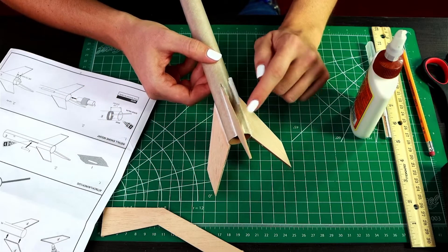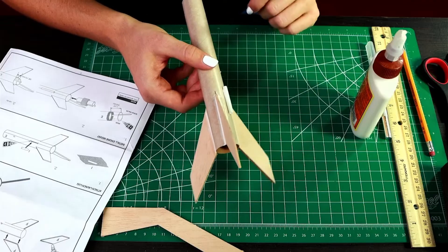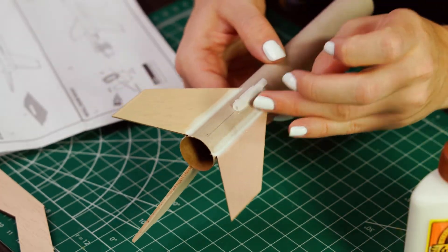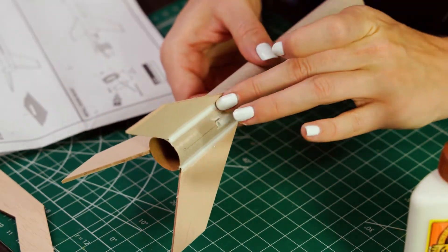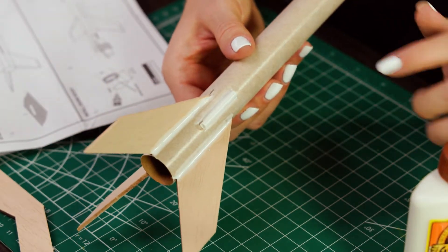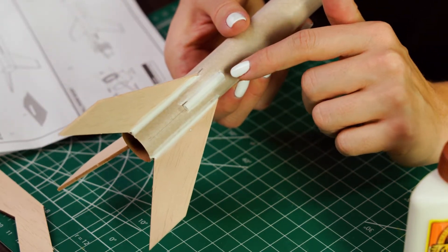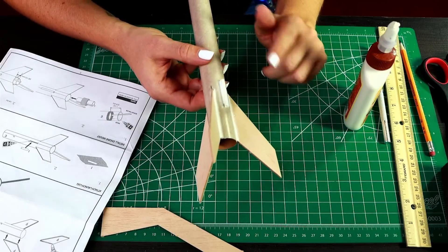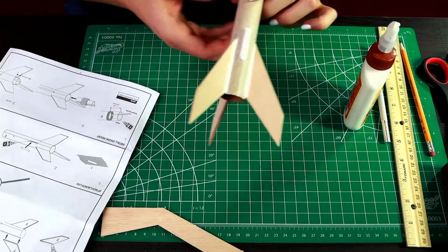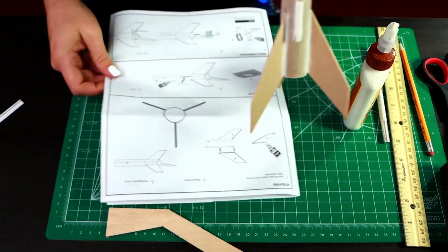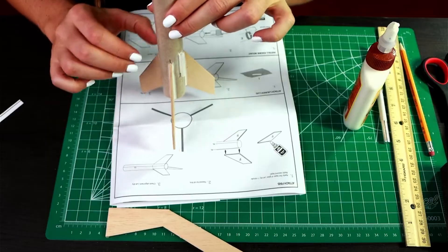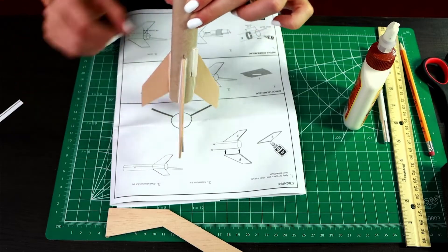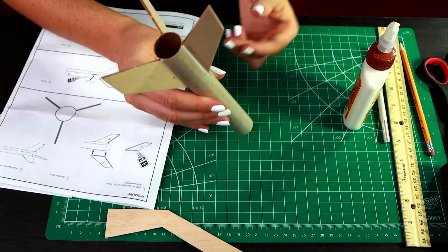I've added fillets on the fins and then I'm also going to add some on the launch lug. Make sure that you don't get any glue inside the launch lug as you do that. It's a good idea since you've just kind of pushed your fins a little bit, just check your alignment again with the alignment guide to make sure that they are still lined up well. Then you can turn it upside down to let them dry.